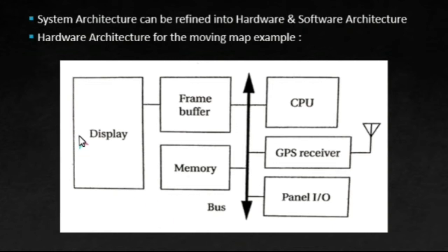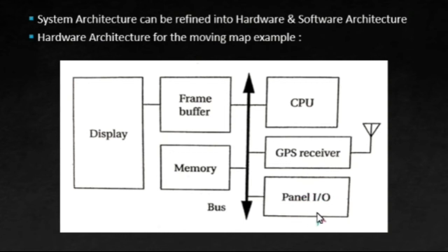In the hardware architecture, all the hardware modules used by the system are displayed. In our Moving Map example, the hardware used includes CPU, Frame Buffer, Memory, Display Unit, GPS Receiver for receiving location, and Input-Output. There are two kinds of memory: Frame Buffer, which stores the pixels used to render the location, and Memory, which is used for general purposes by the CPU. This is the hardware architecture of the Moving Map example.